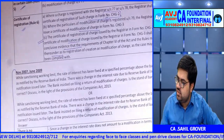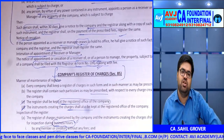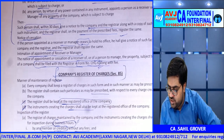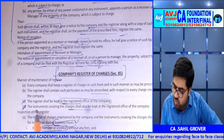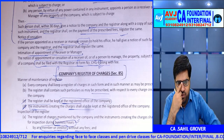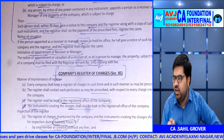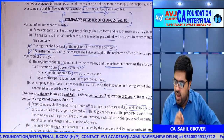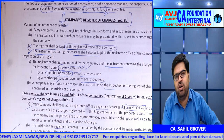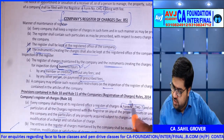Section 85: company's own register of charges. Every company must maintain a register of charges in form CHG7 at its registered office. This register contains details of all charges along with the instruments creating them. It is open for inspection during business hours — by any member or creditor without any fees, and by any other person on payment of the prescribed fees.